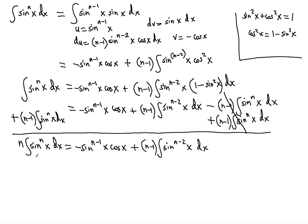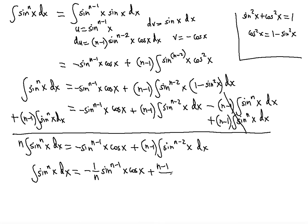All that remains is to divide through by n, treating the integral as a variable. The coefficient on the first term becomes negative 1 over n, giving: negative (1/n) sine to the n minus 1 of x times cosine x, plus (n minus 1)/n times the integral of sine x to the n minus 2 power dx. This is the reduction formula.